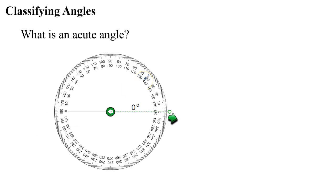This lesson is on classifying angles and we're going to talk about six different types of angles, starting with what is called an acute angle.